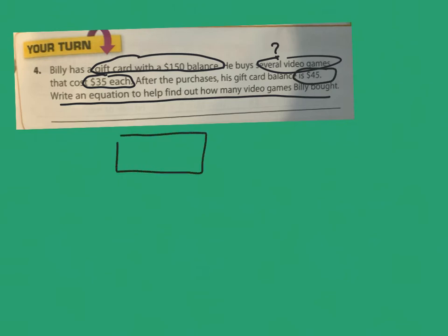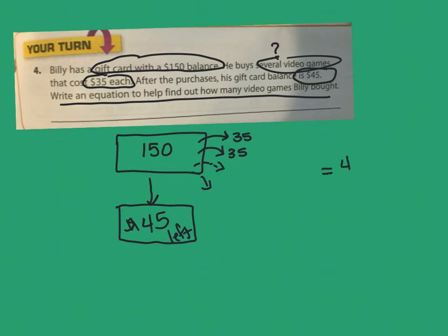So, we have this gift card. And it had $150 on it. But he took off one video game that cost $35. And another video game that cost $35. And he kept doing that. We don't know how many times it took until the card only had $45 left on it. That's what it equaled in the end. So, it equaled in the end $45. He started with $150.